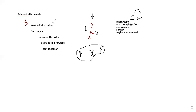Macroscopic anatomy — also called gross anatomy — deals with structures visible to the naked eye. If something is microscopic, it is too small to see without a microscope. If it is macroscopic, you can see it with the naked eye. Those are the structures you can view directly.